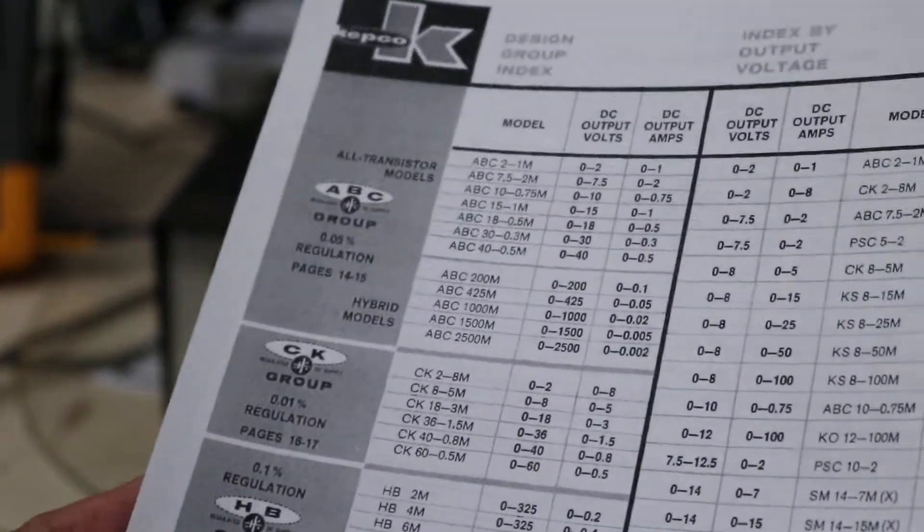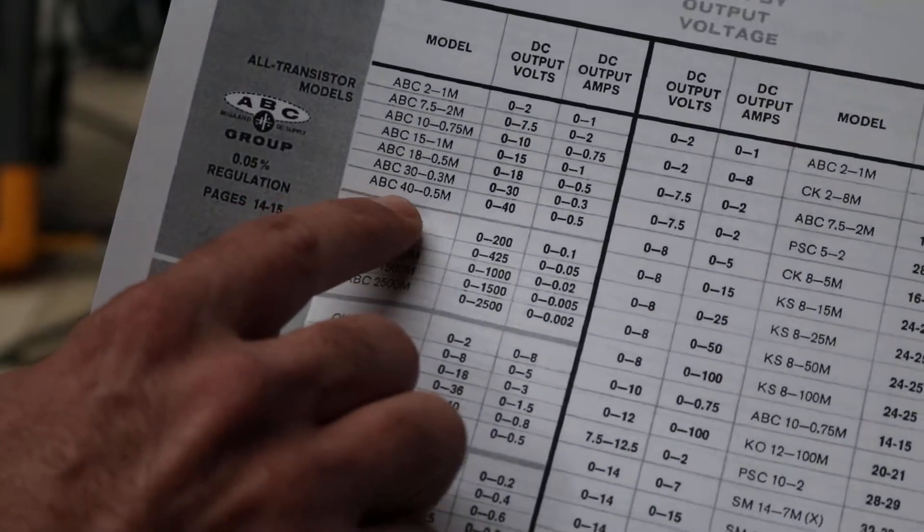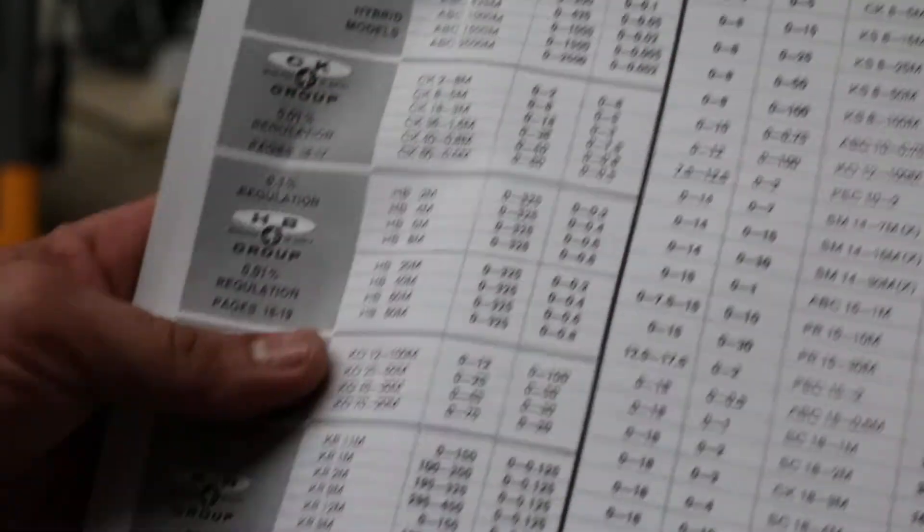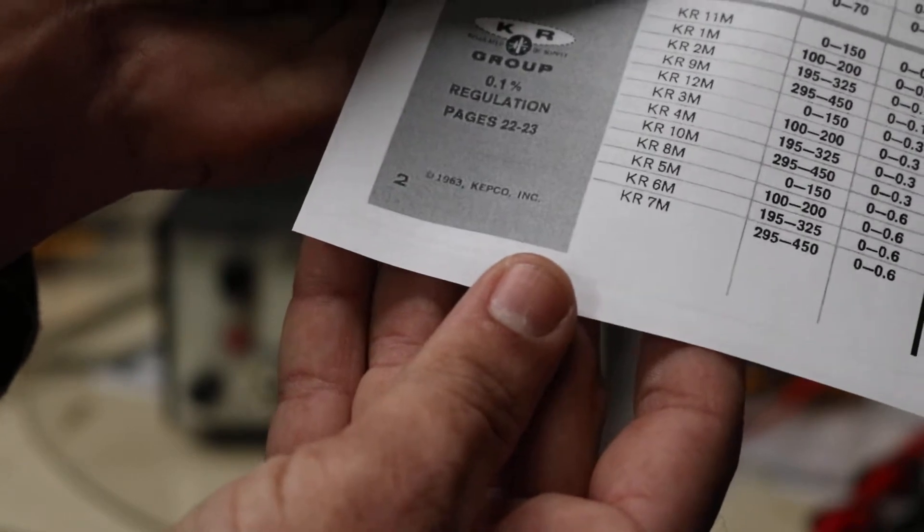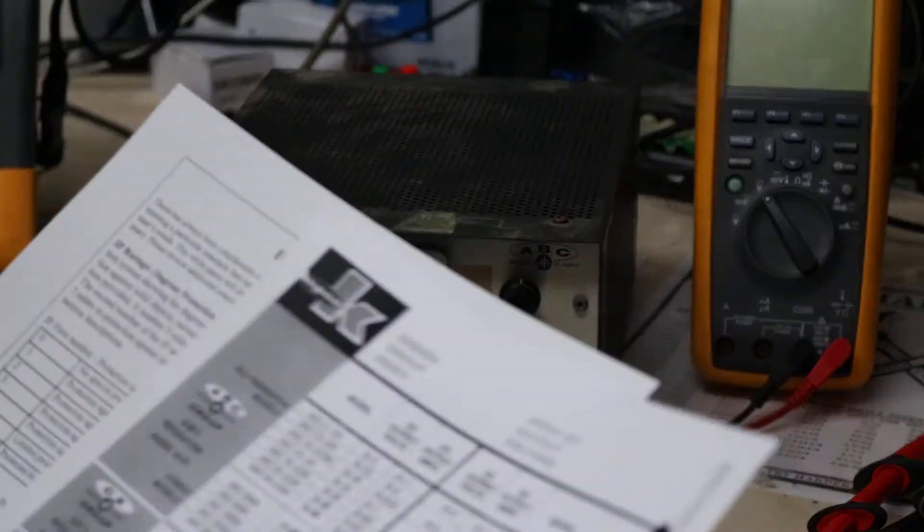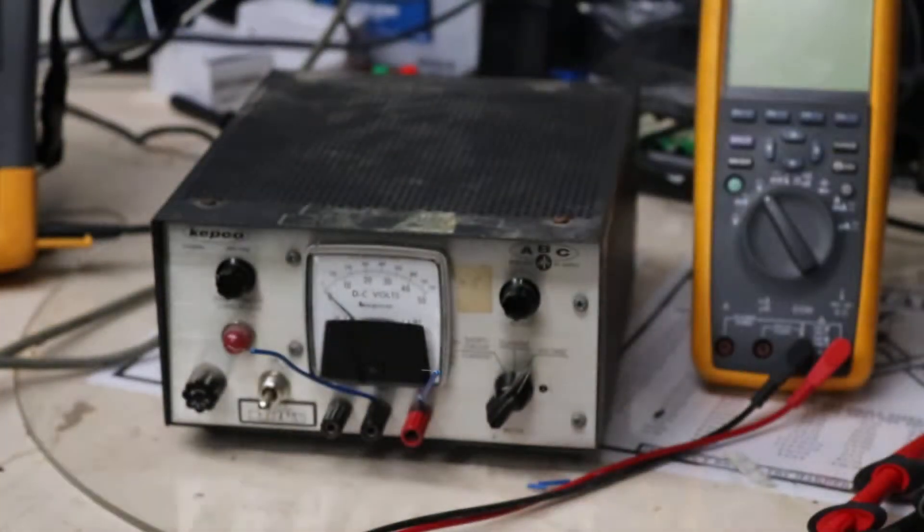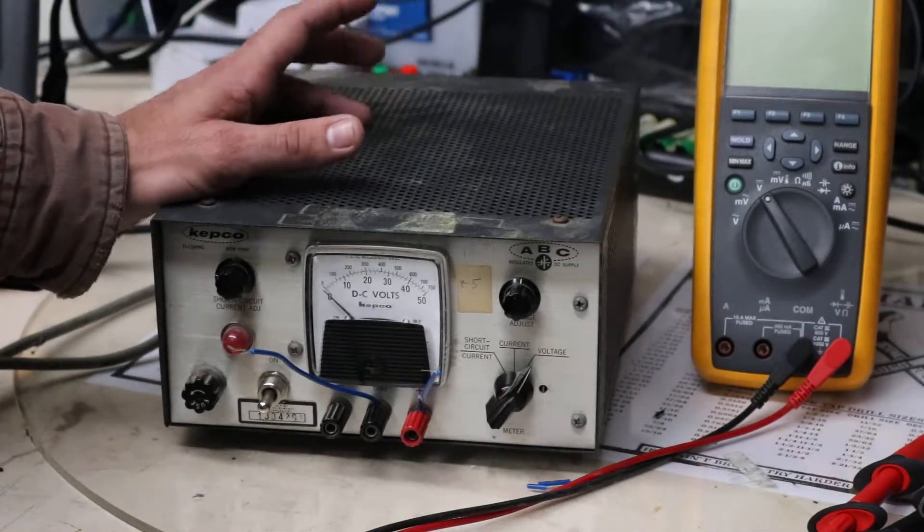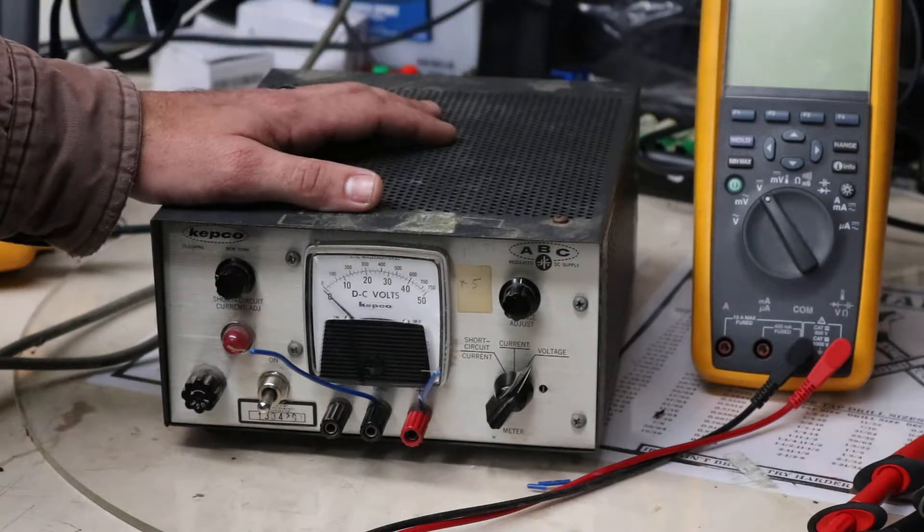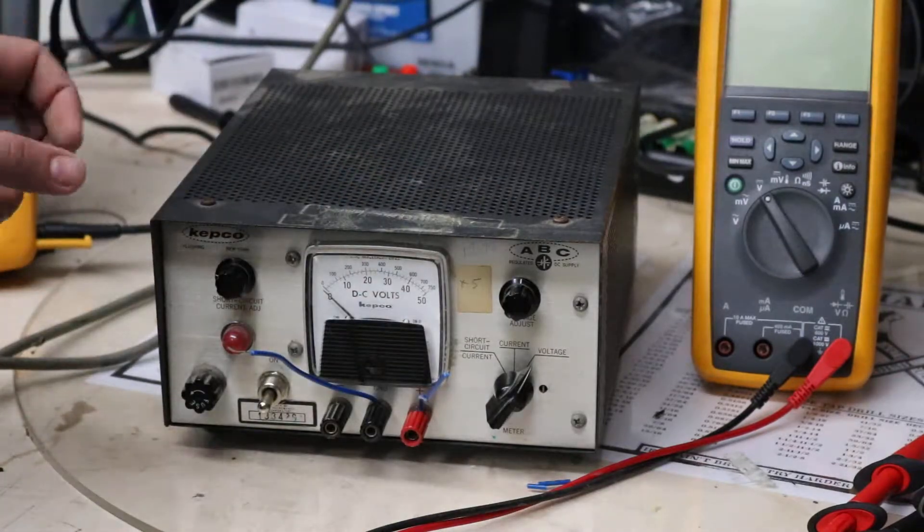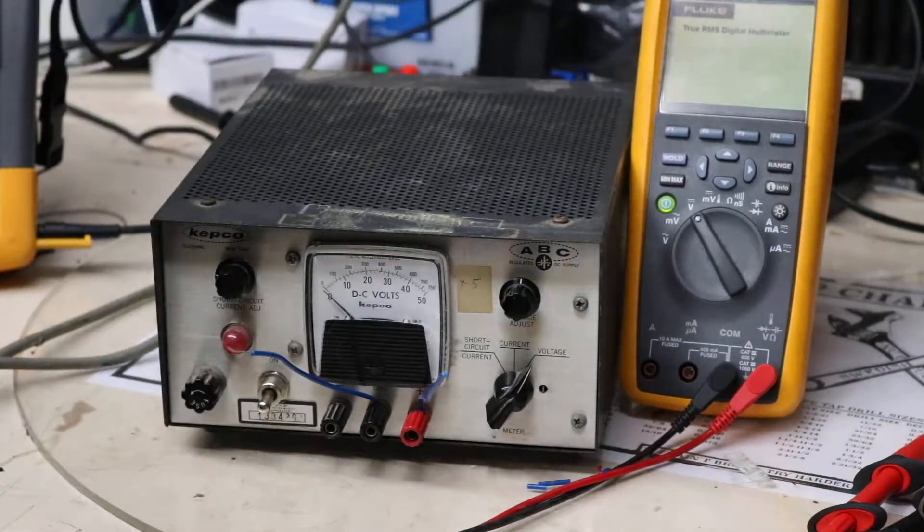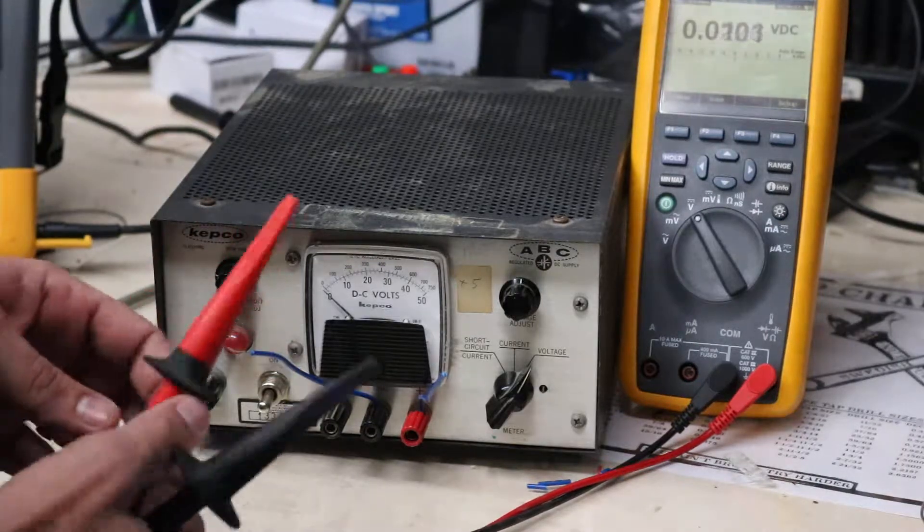Here we show it's an ABC 40-0.5M, zero to 40 volt, zero to half an amp. This document was produced in 1963, so that makes this power supply 53-54 years old. I'm interested to see if it can still hold up to what it was designed to do after 50 some odd years of heavy industrial use and getting knocked around and banged around. Let's jump right into it. We'll turn on my multimeter here, hook up our test leads.